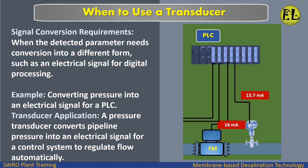When to use a transducer: signal conversion requirements. When the detected parameter needs conversion into a different form, such as an electrical signal for digital processing — for example, converting pressure into an electrical signal for a PLC — a transducer is used. A pressure transducer converts pipeline pressure into an electrical signal for a control system to regulate flow automatically.